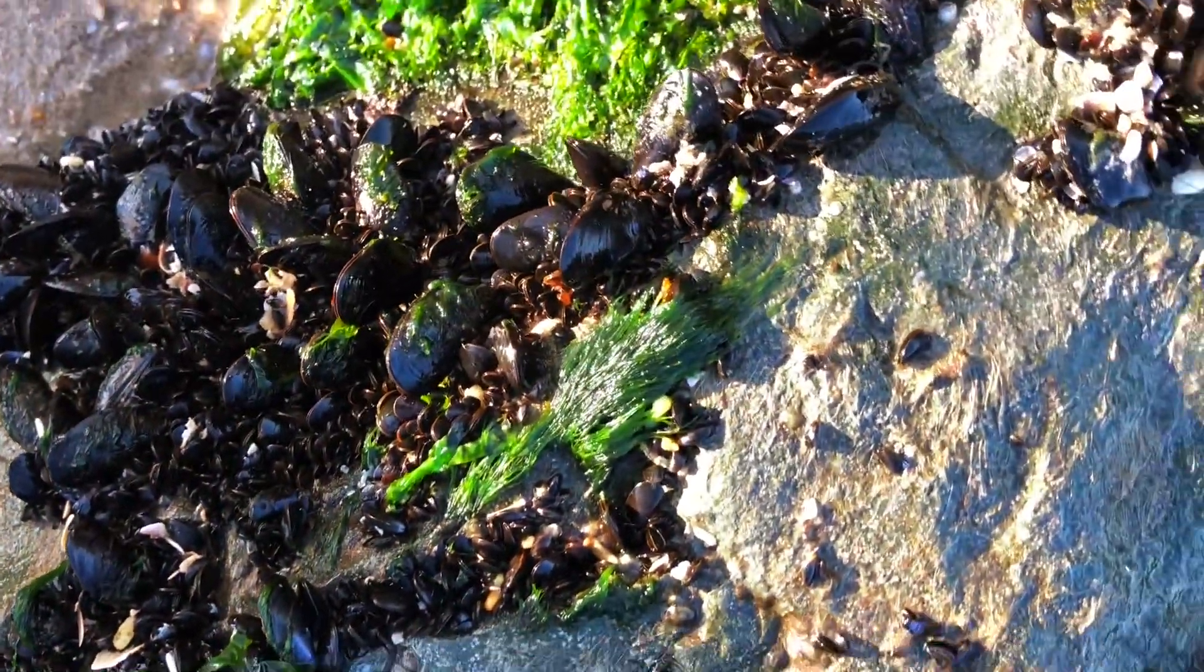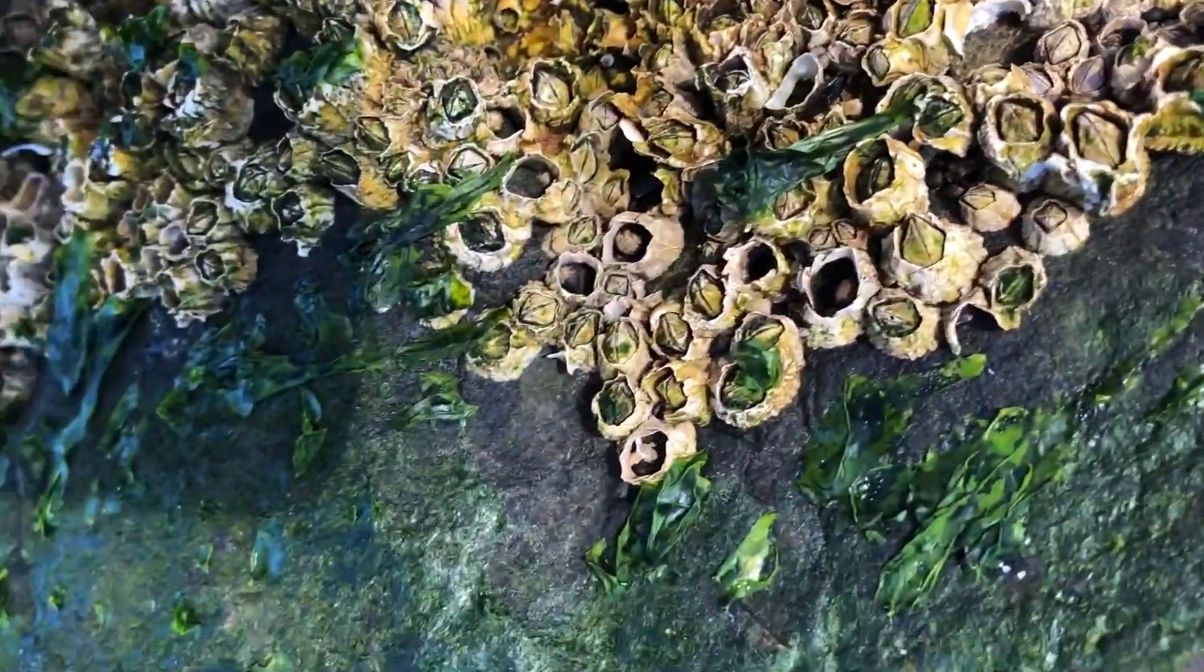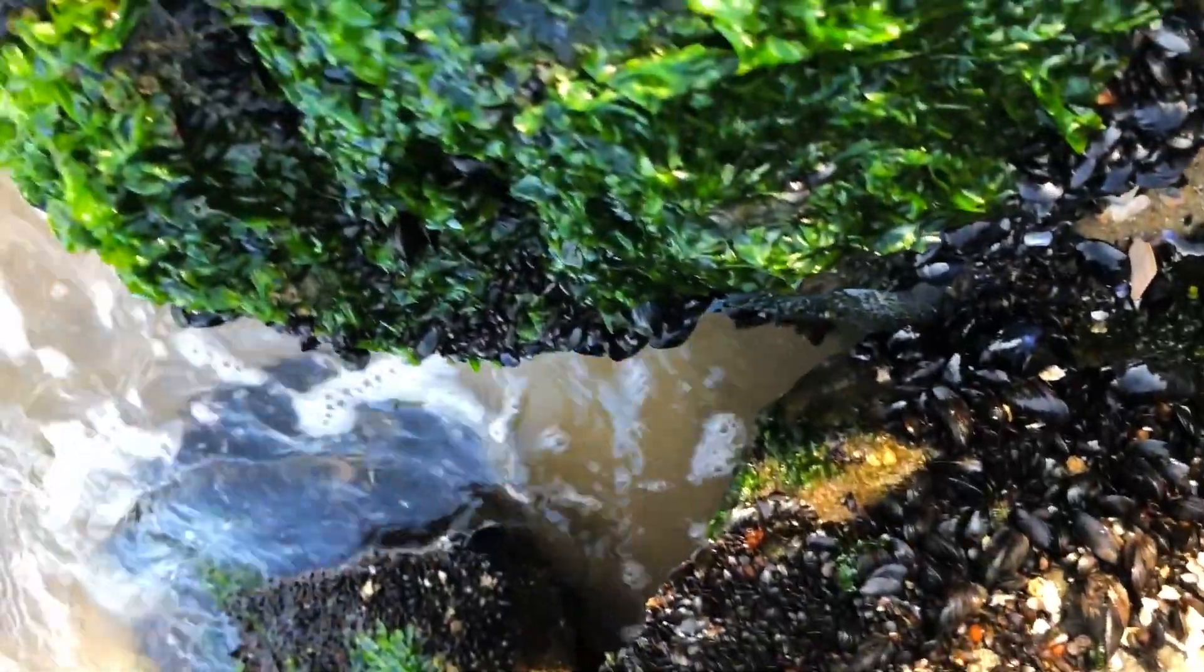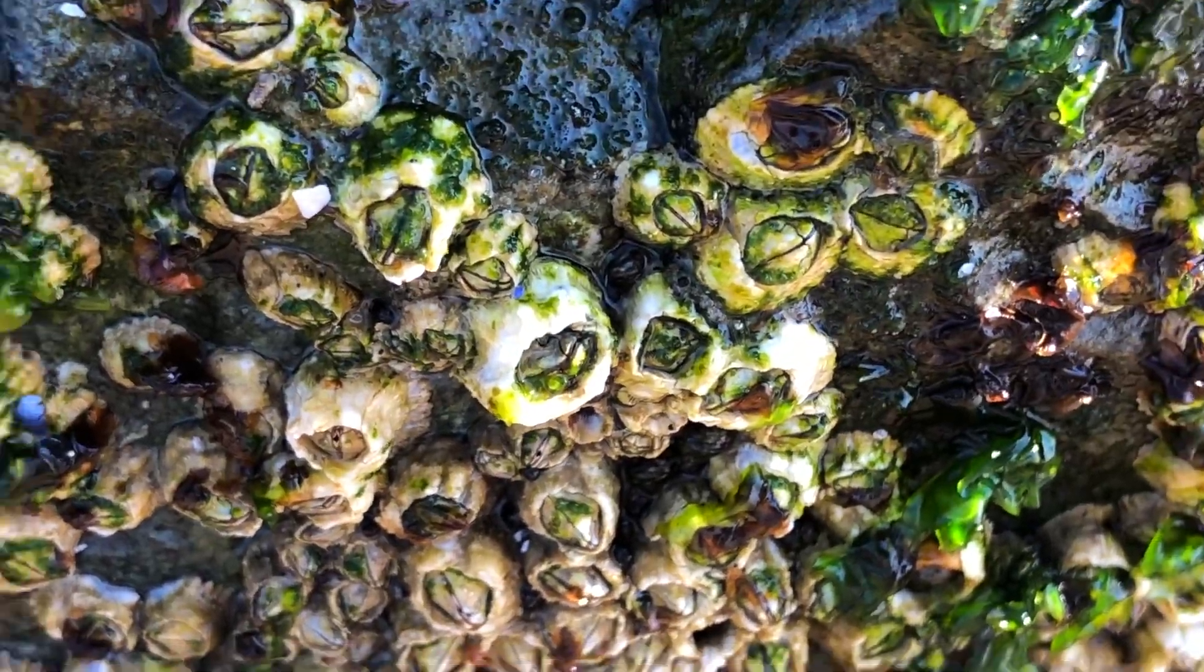The enemies of the barnacles are mussels that compete with them for space on the rocks, and sea snails that eat them for lunch, and breakfast, and dinner.